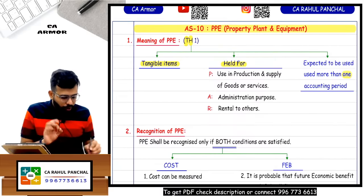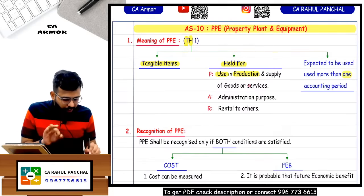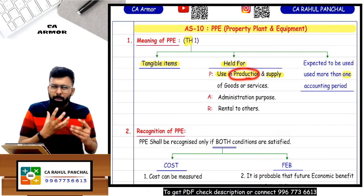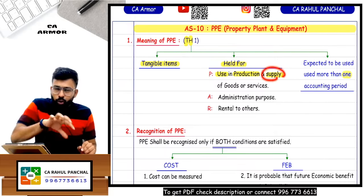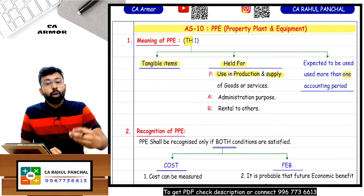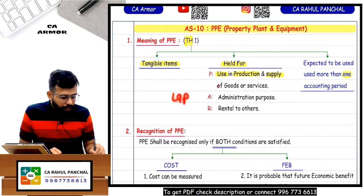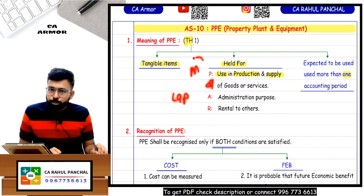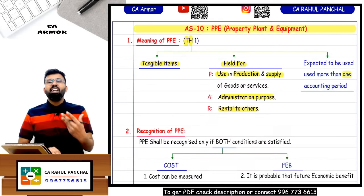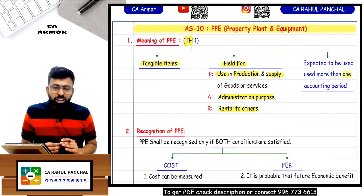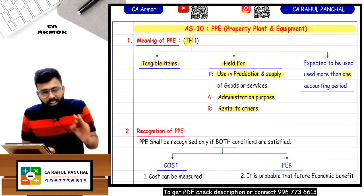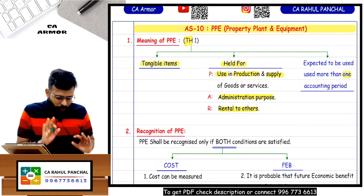PPE should be held for use in either production, supply (distribution), or administration purposes. Production is like a machine - you are manufacturing something, so a machine is required. To distribute, you require a delivery van; for accounting purposes, you require a laptop. Your laptop is PPE, your delivery van is PPE, your machine is PPE. It can also be used for rental purposes - if you buy machinery and give it on rent, it will still be covered under PPE.